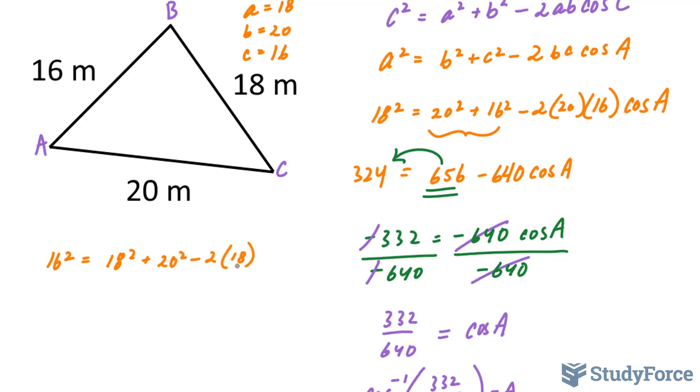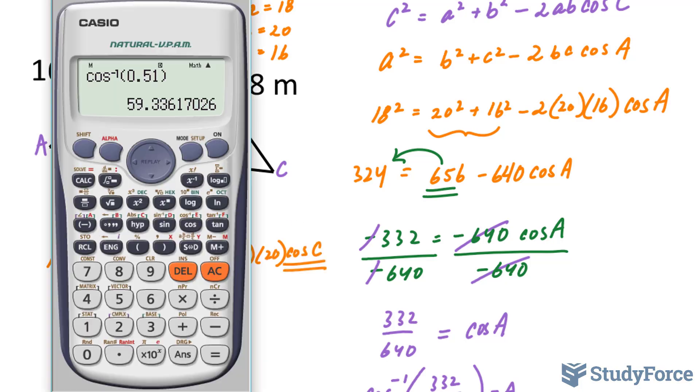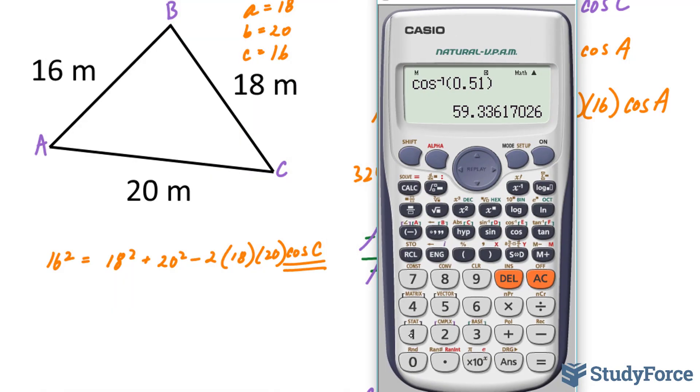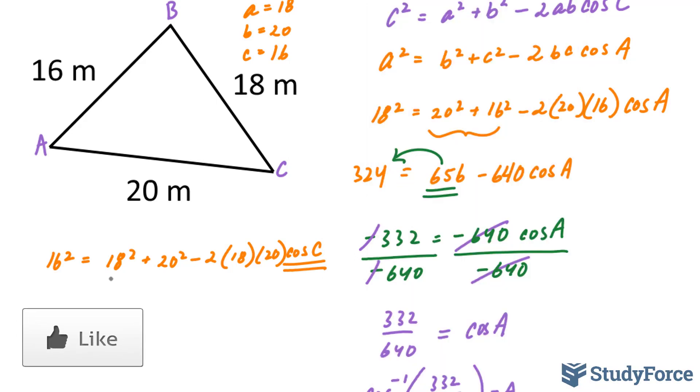Using my calculator, 18 to the power of 2 plus 20 to the power of 2. That gives me 724. Next, we'll do this one. Negative 2 times 18 times 20, and that gives me -720.